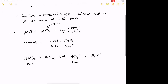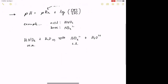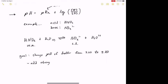Our goal in part two is to change the pH of the buffer — the one we made in part one. We want to make it a little more acidic: change the pH from the original target of 3.00 down to 2.80. The instructions tell us we're going to do this by adding a strong acid. That makes sense — if you put a strong acid in solution, you're going to make the solution more acidic, lowering the pH.